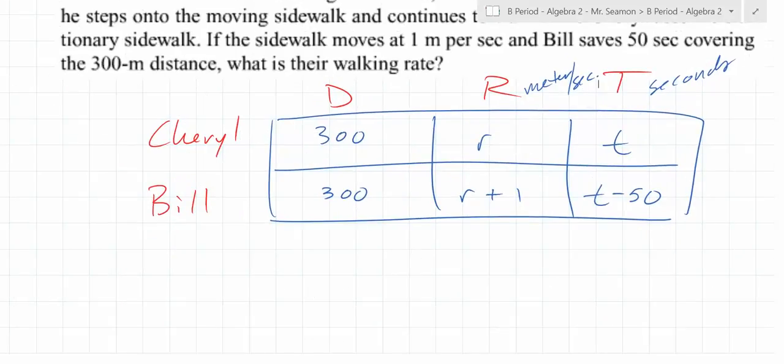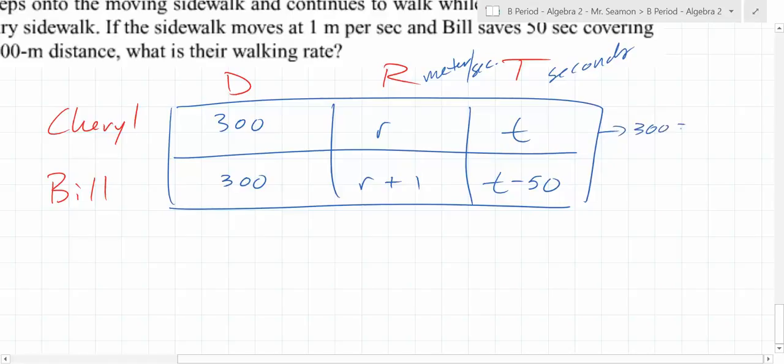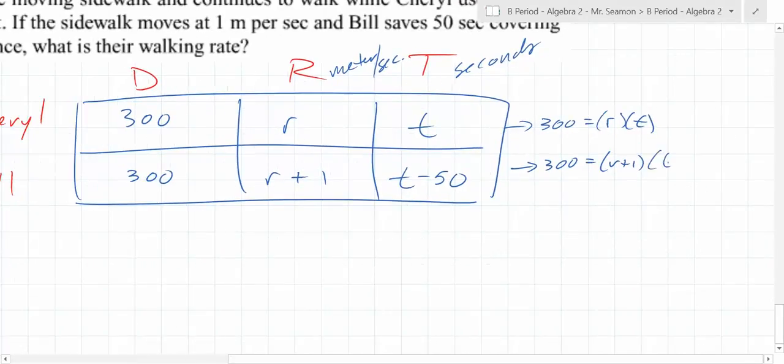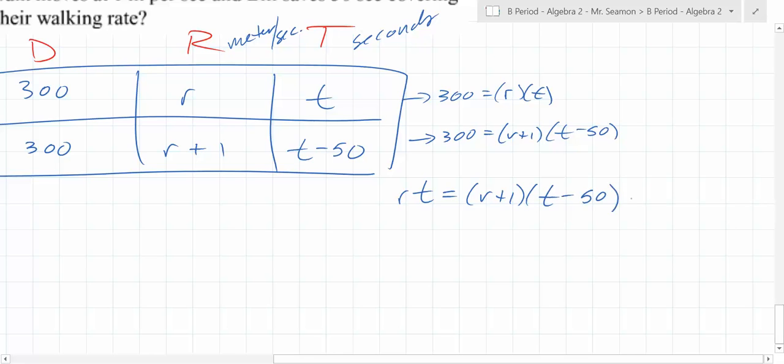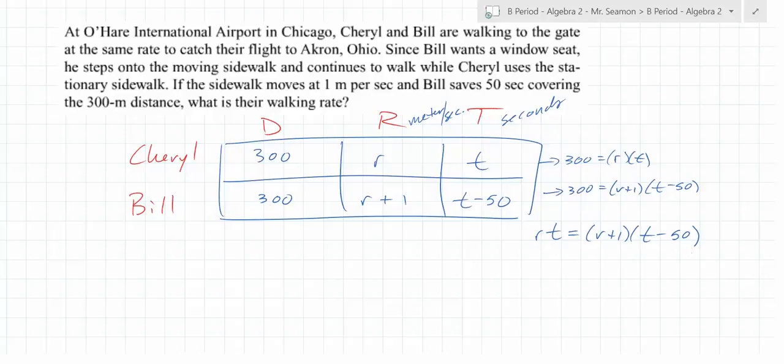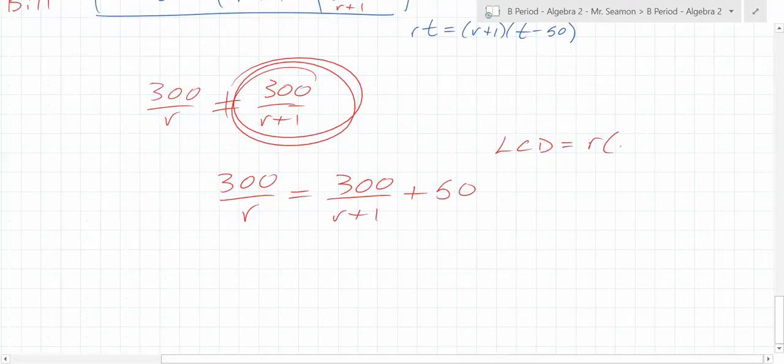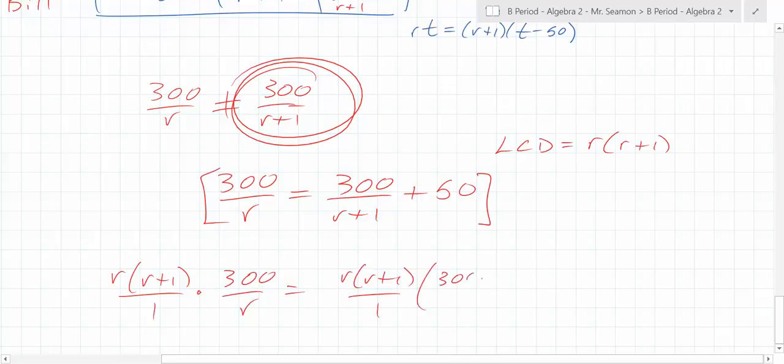So we know that distance equals rate times time. So we know from Cheryl that 300 equals r times t. We know from Bill that 300 equals r plus 1 times t minus 50, because it takes 50 seconds less. But 300 is 300. So can you tell me what I could write? You could write rt equals r plus 1 times t minus 50.